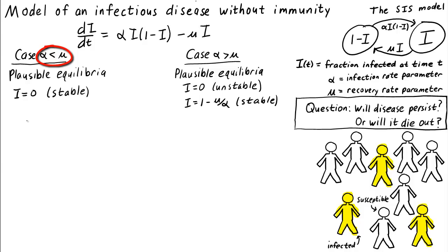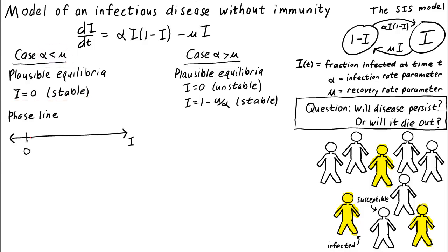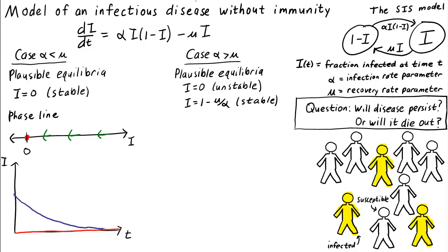Now we're able to answer our question: will the disease persist or will it die out? If alpha is less than mu, the only plausible equilibrium is i equals zero and that equilibrium is stable. The vector field is always pointing toward zero for the realistic part of the phase line where i is non-negative. This means if we start with an infection present, i will decrease with time heading toward zero, and eventually the disease will die out. Our answer: the disease will die out.